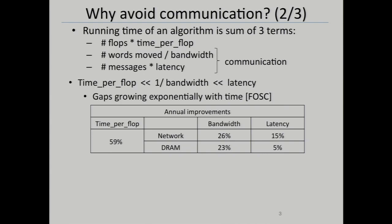Here is some data about how fast all these different hardware parameters are improving—they're all improving, that's the good news. The bad news is that they're growing apart exponentially. Back in the heyday of Moore's Law, your time per flop was improving at 60% a year. Bandwidth was improving at around 26%, and latency only at 15%. In fact, network latency for sending messages hasn't improved very much for a long time. So even if your algorithm is not communication bound today, it may be next year or the year after.